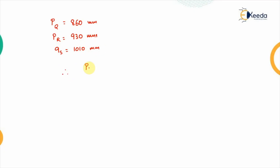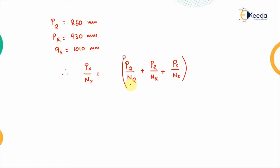The normal ratio method states that PX divided by NX equals the mean of the normal ratios at the other stations: that is (PQ/NQ + PR/NR + PS/NS). Since we have three rainfall stations, this sum is divided by 3.